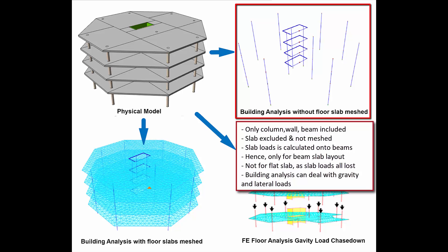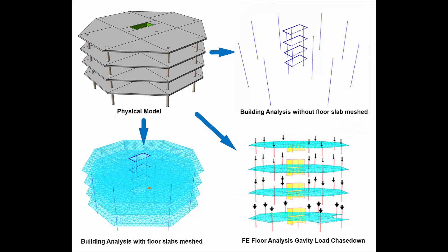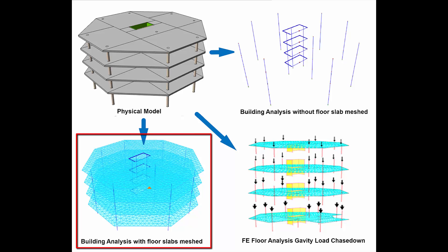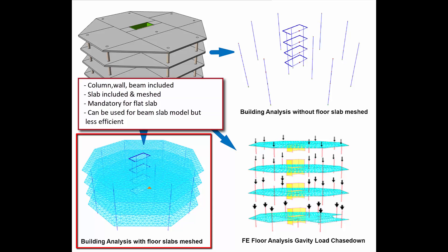Hence, this analysis method should only be used for beam-slab layouts where slabs are completely supported by beams. The next method is building analysis by including the slab meshed. In this case, all floor slabs are meshed. This analytical model is correct and ideal for a flat slab system, as the flat slab load can be captured directly by the columns and walls without having beams. Although this method can also work analytically for a beam-slab system, it is a bigger and more complex model and hence not that efficient. In addition, the result will not be comparable to the traditional method of calculating slab loads on beams first before analyzing for member loads, due to interference of the slab mesh with frame elements.